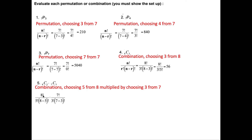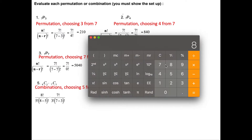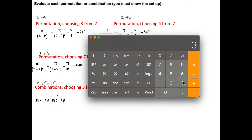That is eight factorial over five factorial over eight minus five factorial, times seven factorial over three factorial, also over seven minus three factorial. Let's do that on the calculator. We have eight factorial divided by five factorial divided by three factorial, times seven factorial divided by three factorial divided by four factorial, which is 24.